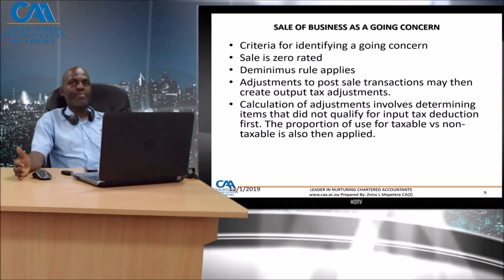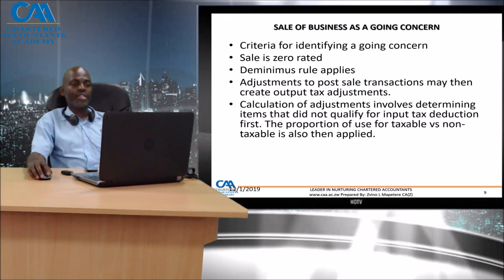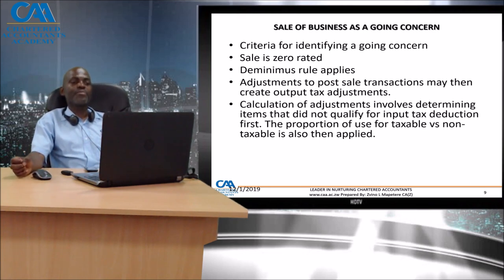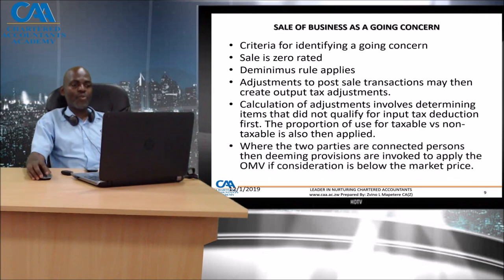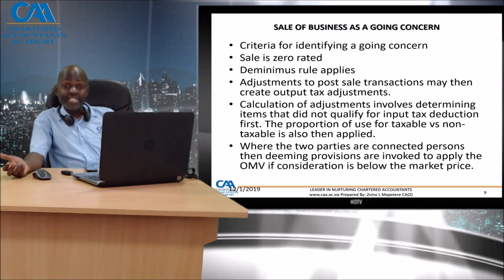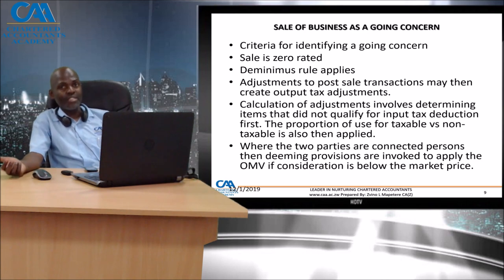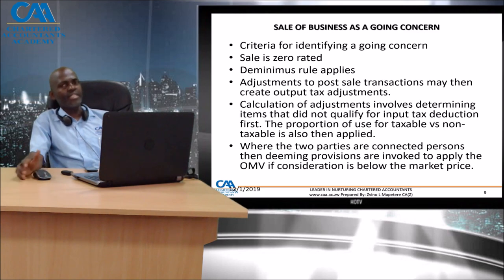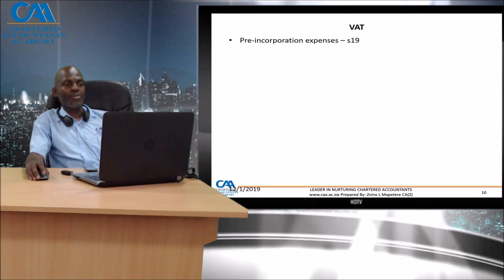Post-sale transactions may create output tax adjustments. You can sell a going concern and then immediately start stripping, having taken advantage of the zero rate - but post that sale, the zero rating stops. Calculation of adjustments involves determining items that did not qualify for input tax deduction and applying the proportion of use for taxable versus non-taxable. In consolidations, acquisitions, and mergers, always look out for the buying and selling of a business as a going concern. Where two parties are connected persons, deeming provisions are invoked to apply open market value considerations.